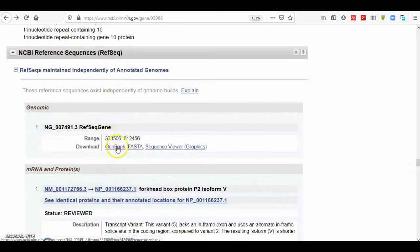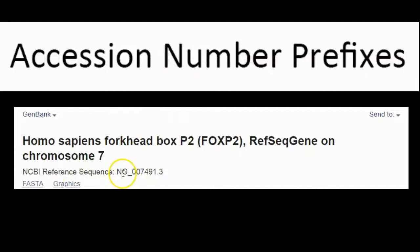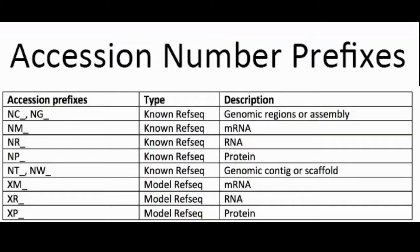For example, as we came across before for FOXP2, here is the accession number associated with GenBank for FOXP2 gene. It begins with NG, then underscore, then a number. So accession numbers are unique and they differ in different databases for the same gene.